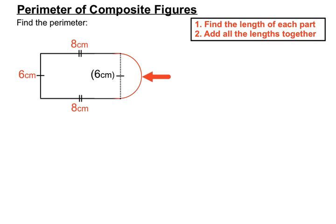One of our edges is that red edge — the half circle. It's called an arc. We'll need to find that arc length to add together at the end with our 8, our 6, and our other 8. We need to know the distance around that half circle — that arc length.